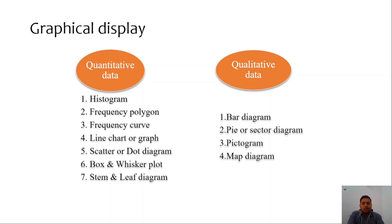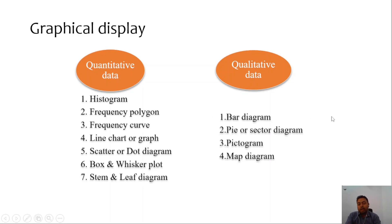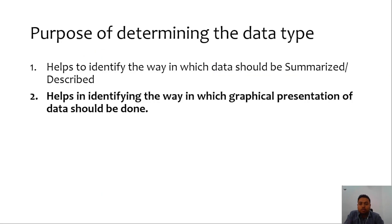The point to emphasize here is that there are several ways in which a type of data can be graphically displayed. Quantitative data can be displayed graphically with box plots and histograms, whereas qualitative data can be displayed with bar diagrams and pie charts. These are not interchangeable. You need to determine the data type so that you can appropriately decide the graphical display. The second purpose of determining the data type is that it helps in identifying the way in which graphical presentation of data should be done.